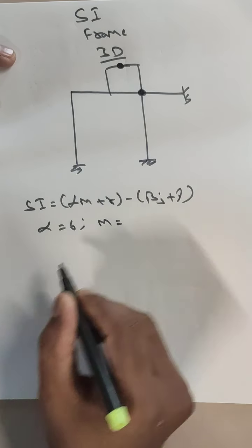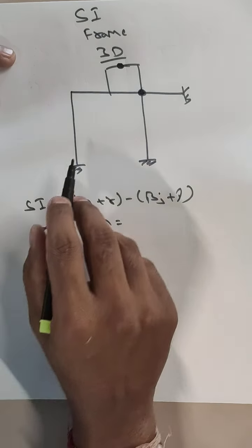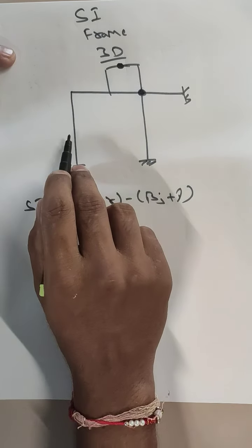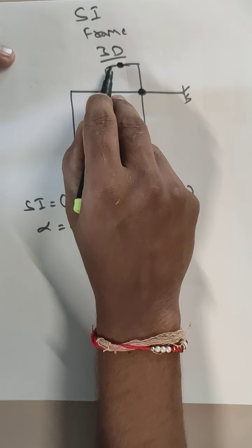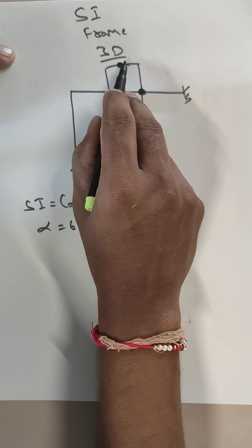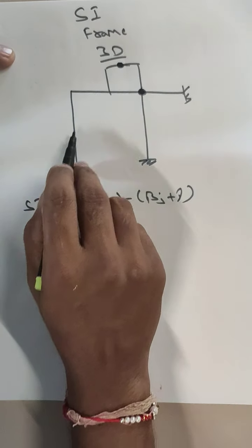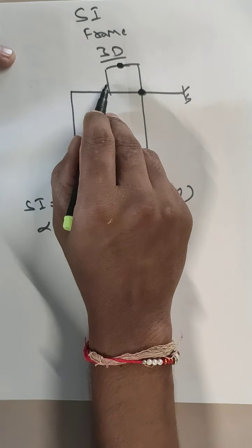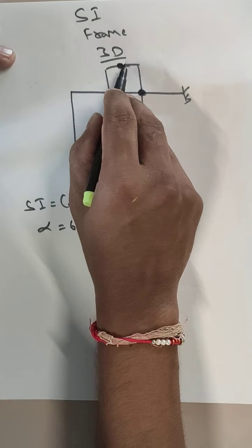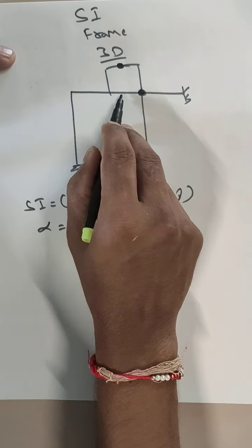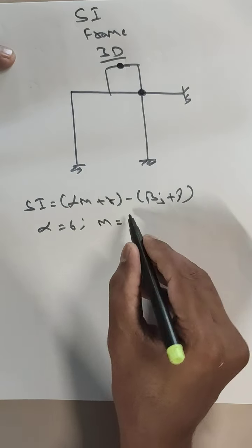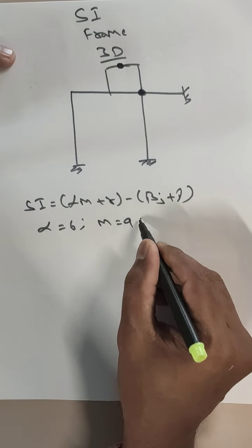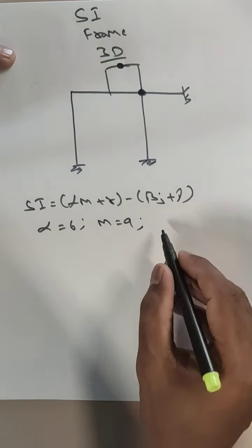Now for m, we count the members: 1, 2, 3, 4, 5, 6, 7, 8, and one more — 9. So the number of members we have is 9.